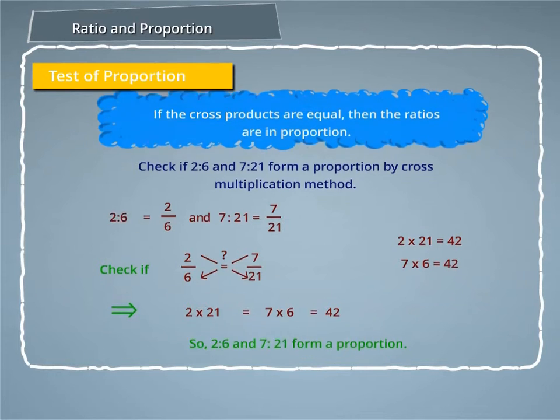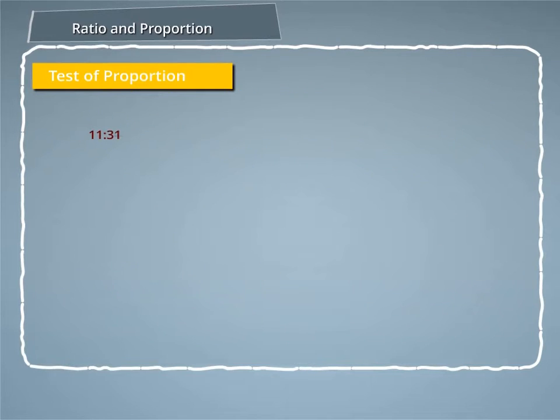If 11 is to 31 and 3 is to 9 make a proportion, we change them into corresponding fractions. We cross multiply and find the products 11 into 9 and 31 into 3.